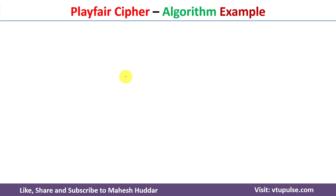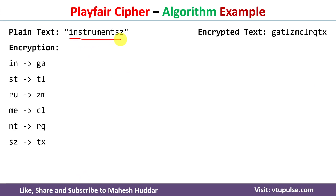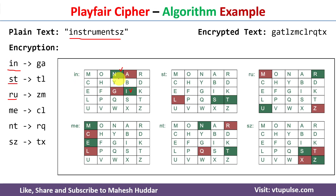Now we will take a complete example to understand the encryption process in Playfair. The plaintext is 'instruments'. First, we divide it into digraphs: IN, ST, RU, and so on. For IN, I and N are not in the same row or column, so we form a rectangle — going clockwise, I is encrypted as G and N is encrypted as A, giving GA. For RU, R and U are also not in the same row or column — R is encrypted as Z and U is encrypted as M, giving ZM. Similarly, encrypting all remaining digraphs gives the complete ciphertext.